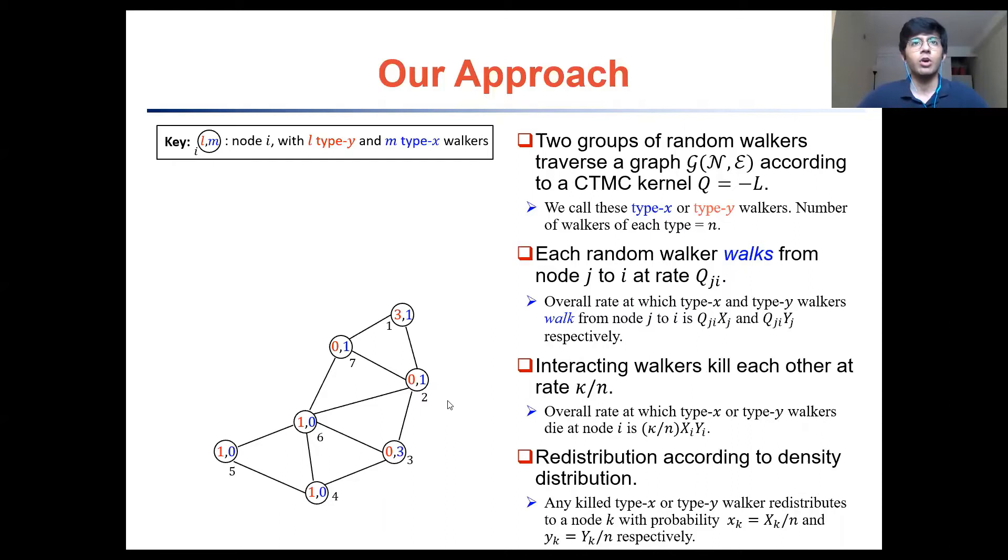So a blue walker could walk from node 2 to node 1 at rate Q2-1 at any given time. Now this means that at node 1 there are now three red walkers and two blue walkers. This is what we actually call an interaction and we design it to be competitive in nature. We say that every red walker kills every blue walker with rate kappa over n, and every blue walker in turn kills every red walker with the same rate. So overall there is a competitive interaction going on at node 1 which will result in a few walkers eventually dying or being killed by the walker of the opposing group.